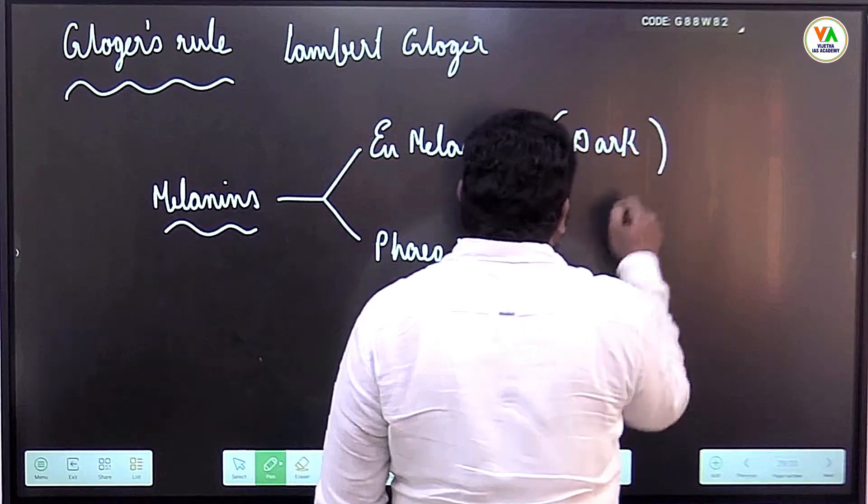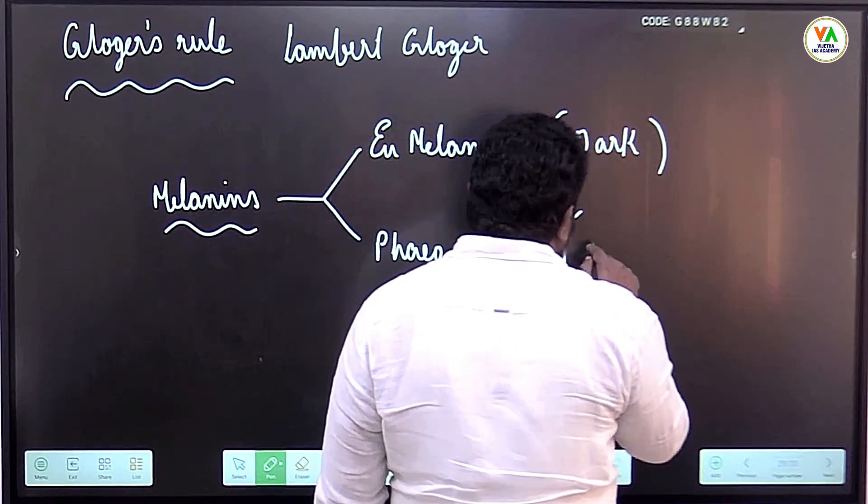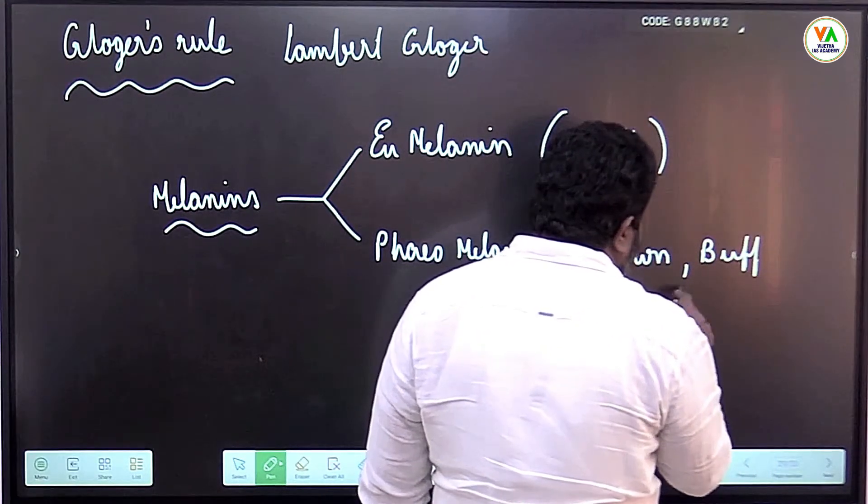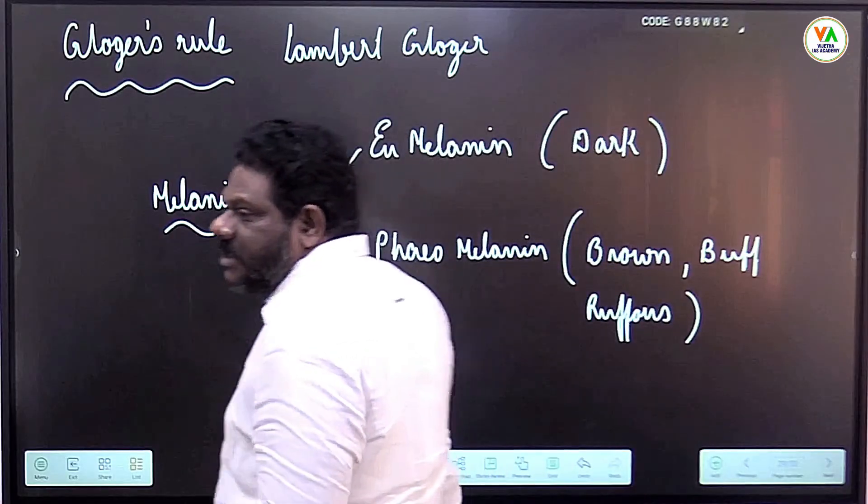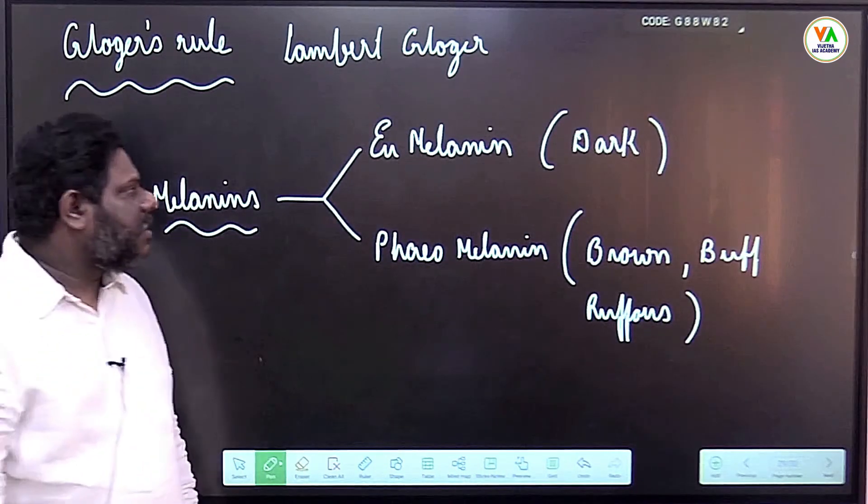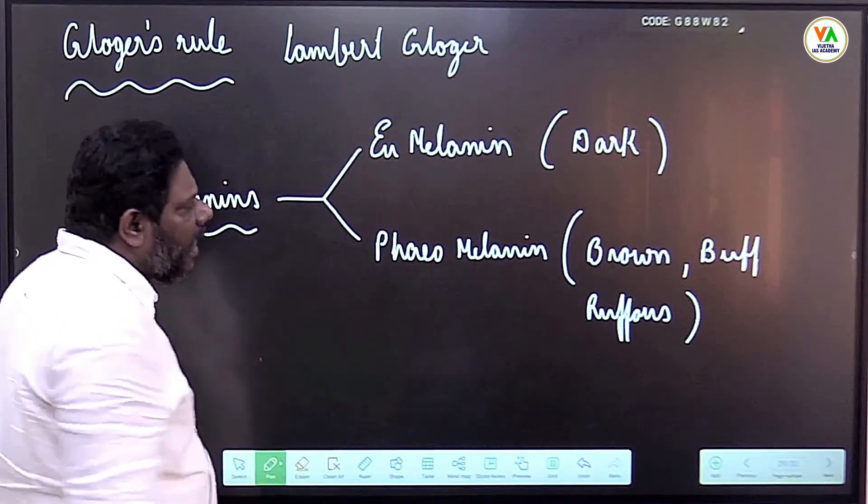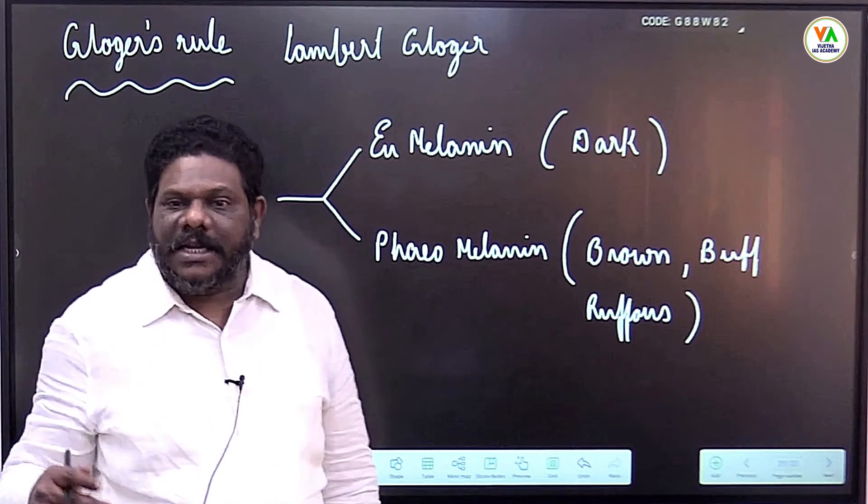Eumelanin is responsible for dark skin coloration, and pheomelanins are responsible for brown, buff, and rufous coloration. Buff is brownish red, rufous is reddish brown. A decrease of both eumelanin and pheomelanin will result in fair skin color.